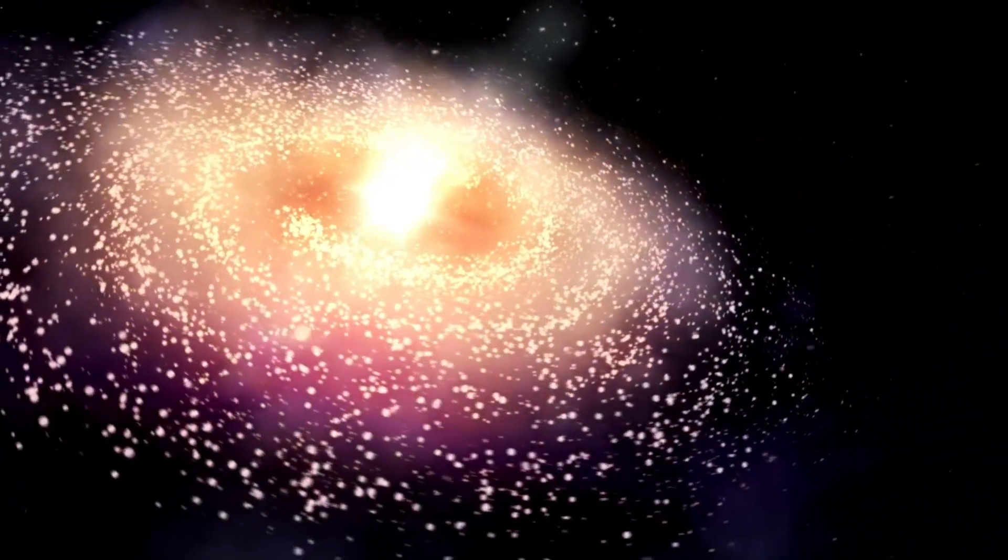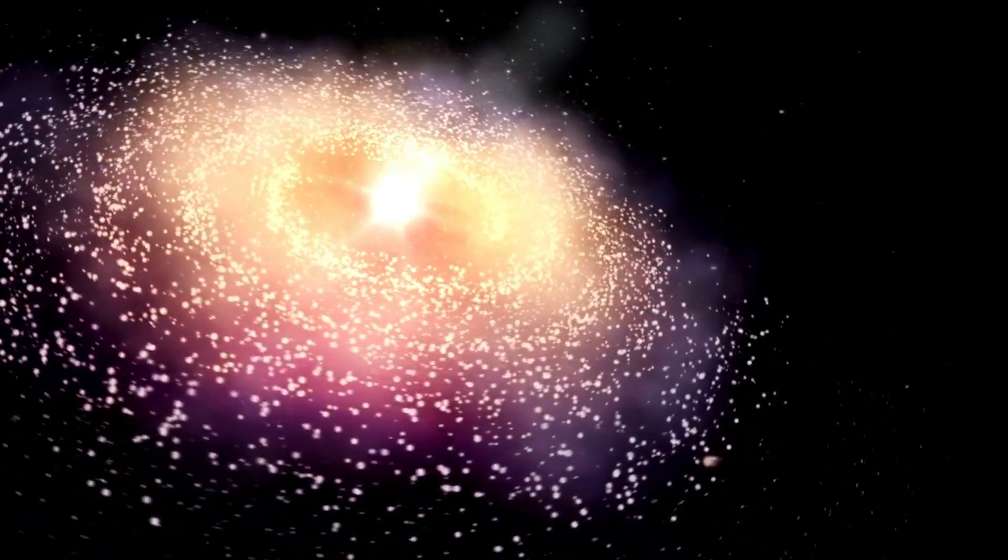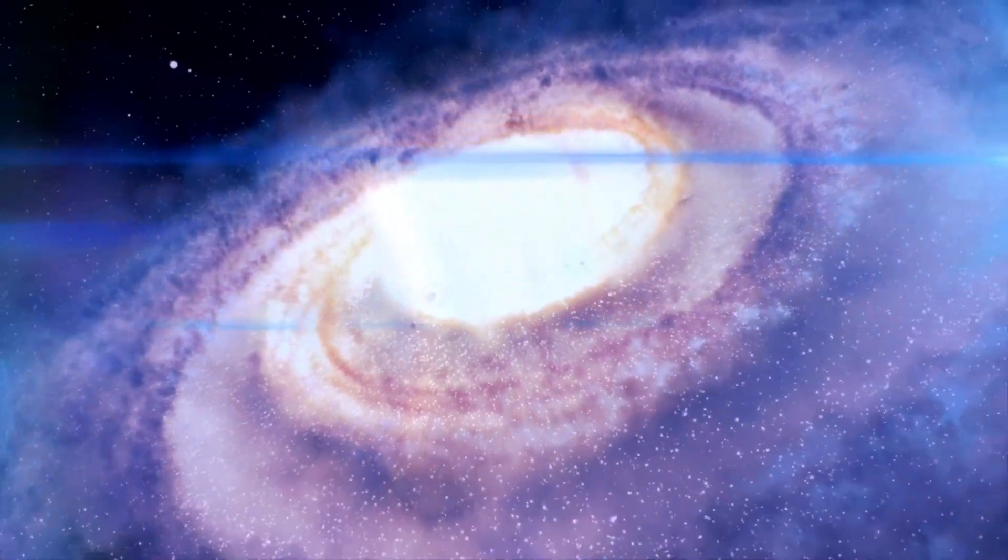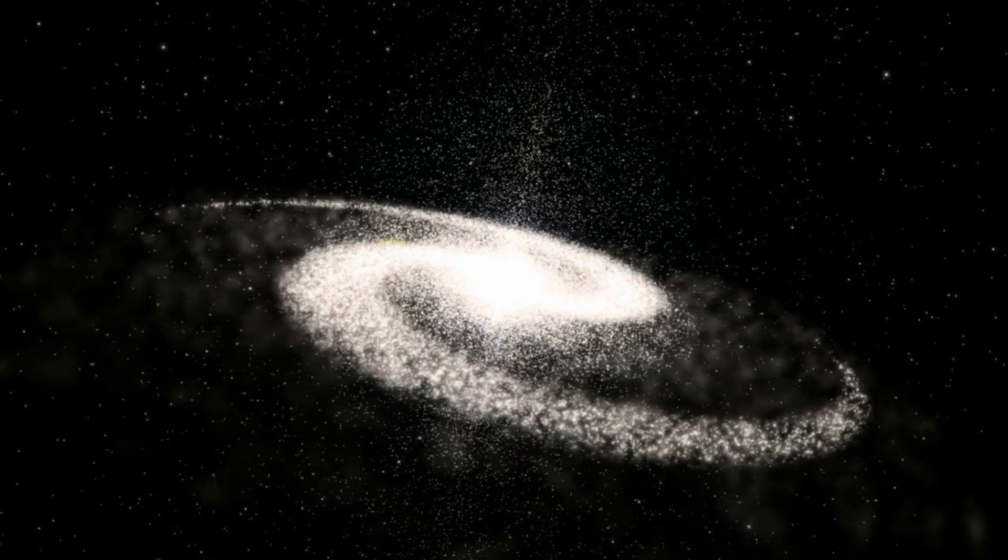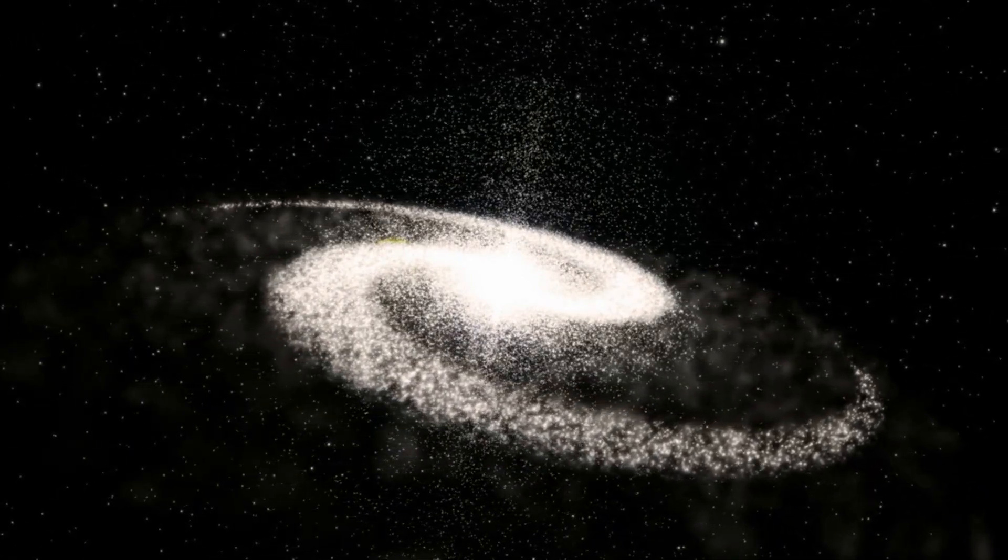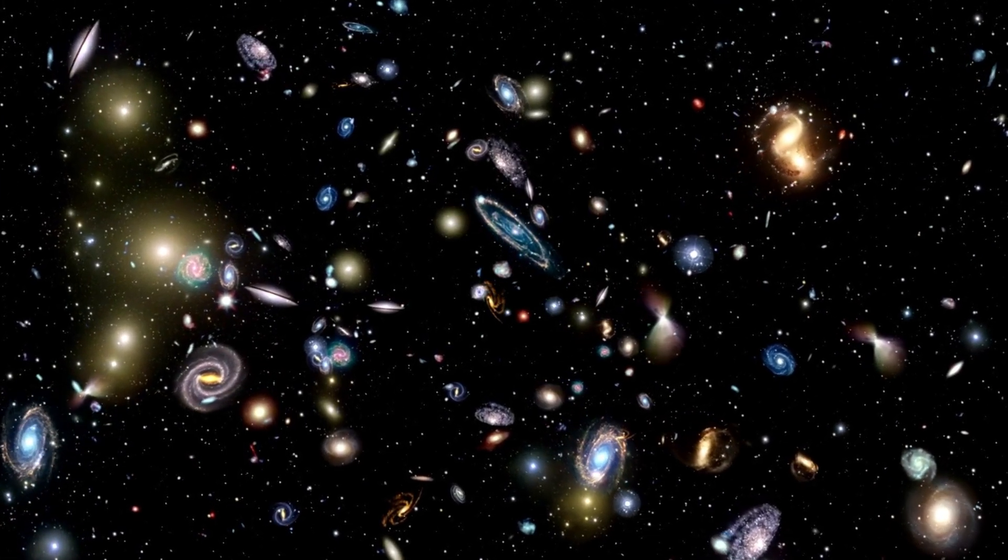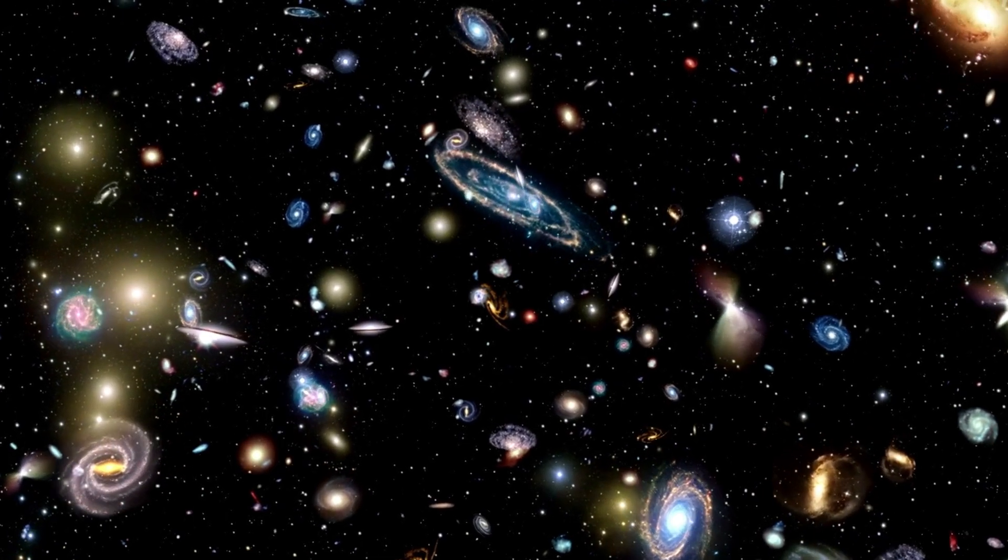The team of astronomers who made the discovery has named these extraordinary galaxies universe breakers, as their existence would alter our entire understanding of the universe. Something does not fit here anymore. The theory of the Big Bang tells us that the universe was a hot mess after the initial event. The first solid objects took many millennia to form, and it took countless additional years for the objects to reach sufficient density and produce light.